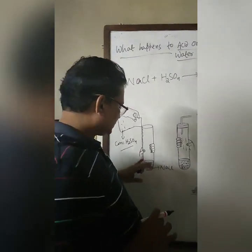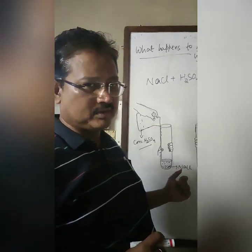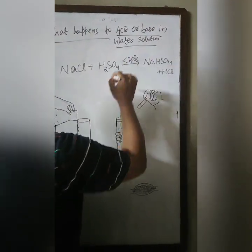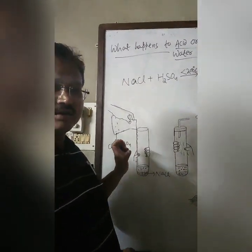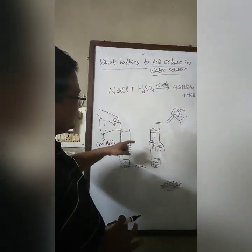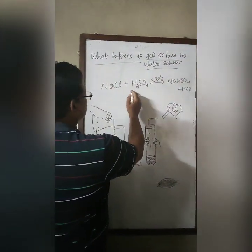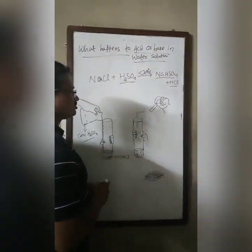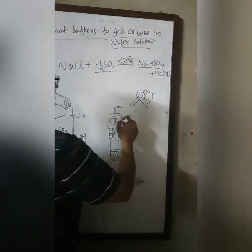One thing to note here: the test tube needs to be warmed, because this reaction is carried out at around or less than about 200 degrees centigrade. So the apparatus needs to be heated, and after heating you will find some vapors started coming out, because concentrated sulfuric acid reacts with sodium chloride to form the salt and hydrogen chloride gas.